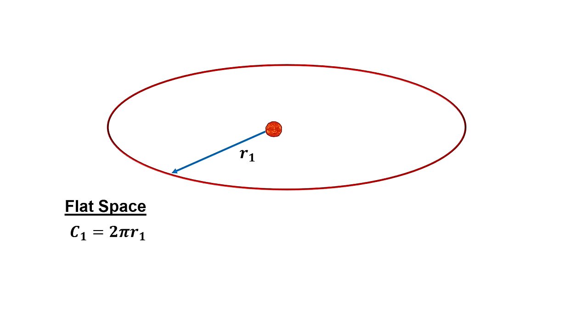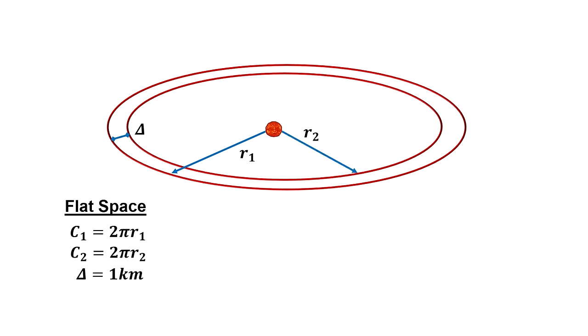If we existed in flat Euclidean space, we would calculate the circumference of an orbit one kilometer closer to the Sun, and see that the distance between the orbits is one kilometer.